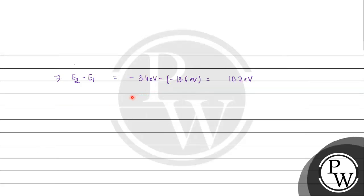Now if we talk about ionization energy — from first orbit to second orbit, that's the excitation energy. Ionization energy is basically equals to E∞ minus E1, meaning we take the electron from the first orbit to an infinite distance from the nucleus.